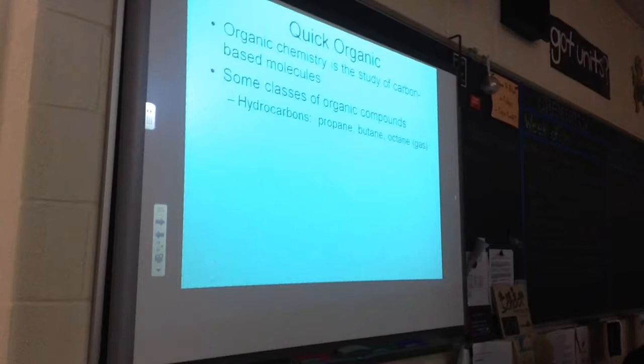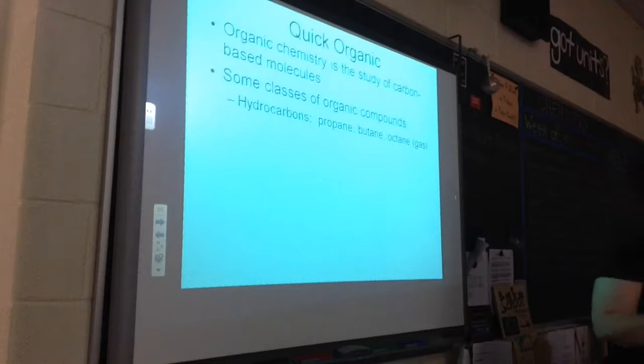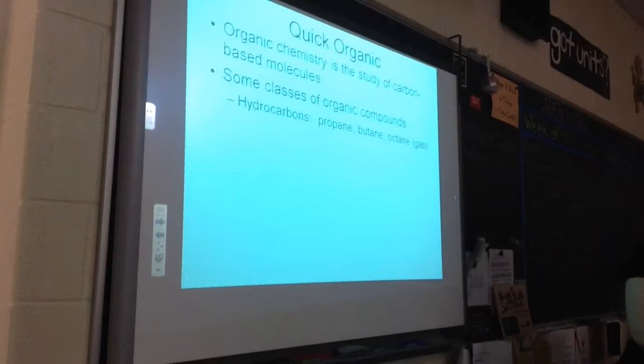First is hydrocarbons. We've talked about hydrocarbons already — back during combustion. Most combustion reactions are hydrocarbon plus oxygen yielding CO2 plus H2O. We can also burn glucose, which is not a hydrocarbon — it's organic, C6H12O6 — but it's not technically a hydrocarbon because it has oxygen in it.